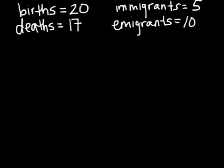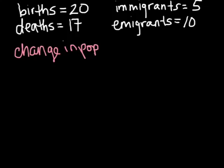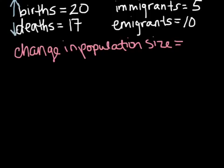So if we want to figure out the change in the population size, we just do some very simple math, which you can probably figure out right now. Now, births are going to increase a population. Deaths will decrease a population. Immigrants moving into an area will increase.